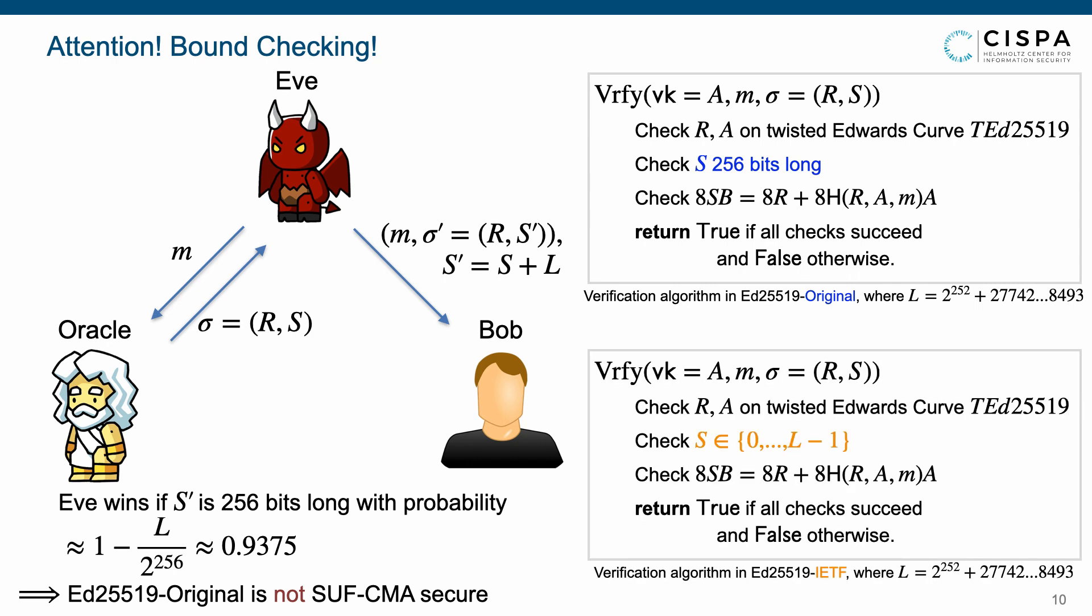However, the IETF and Libsodium versions additionally involve the bound checking. In addition to the signature validation check, these two versions also ensure the value S in the range from 0 to L-1.